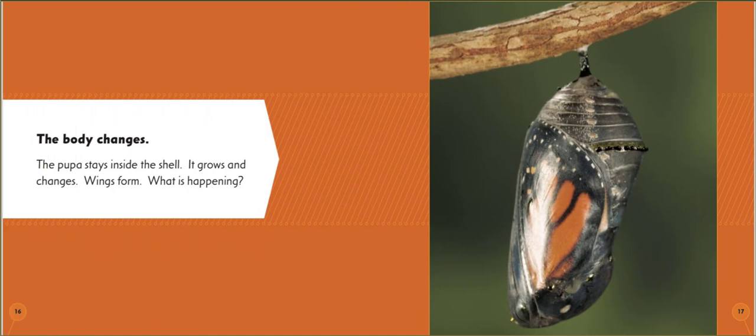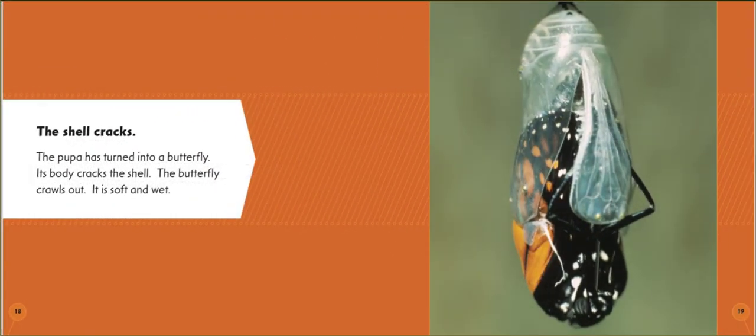The pupa stays inside the shell. It grows and changes. Wings form. What is happening? The shell cracks. The pupa has turned into a butterfly.